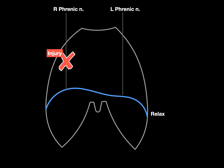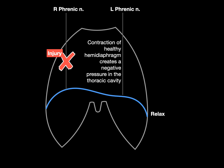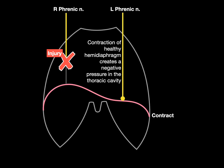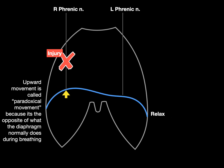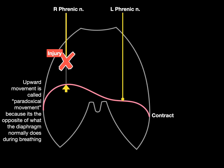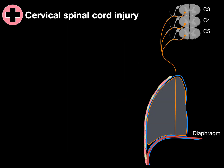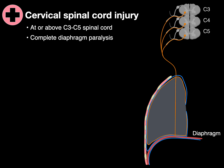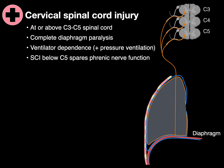If we look at what happens when the right phrenic nerve is injured, contraction of the healthy hemidiaphragm creates negative pressure in the thoracic cavity, and the upward movement of the paralyzed side is called paradoxical movement because it's the opposite of what the diaphragm normally does during breathing. A cervical spinal cord injury at or above the C3, C4, C5 spinal cord level results in complete diaphragmatic paralysis, and the patient becomes dependent on a ventilator — positive pressure ventilation. A spinal cord injury below C5 typically spares phrenic nerve function.